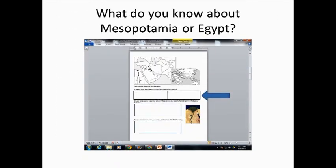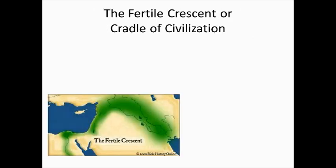I would like for you to pause the video after you read this question. I want to know what you know about Mesopotamia and Egypt before we start. Pause the video, answer, and then when you think you've got some good answers, we'll come back and see what you know and then what you learned. So the first thing we're going to talk about is the geography of the Fertile Crescent and why this whole area is called the Fertile Crescent.